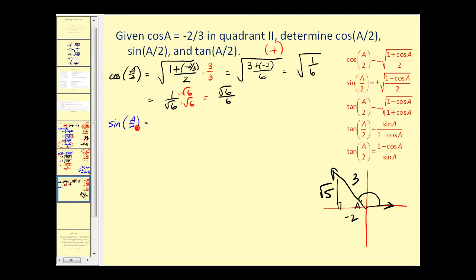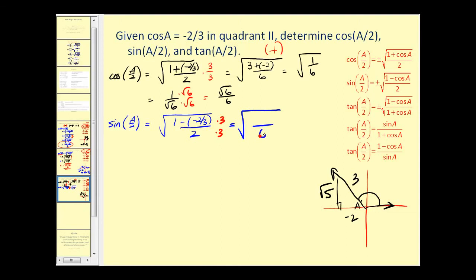Let's find the sine of a over two. We have the square root of one minus cosine a, so one minus negative two-thirds, all over two. Clearing the fraction by multiplying the top and the bottom by three, we'd have six again in our denominator. Here we'd have three plus two, which equals the square root of five-sixths, which equals the square root of five over the square root of six. Rationalizing, we have the square root of thirty over six.